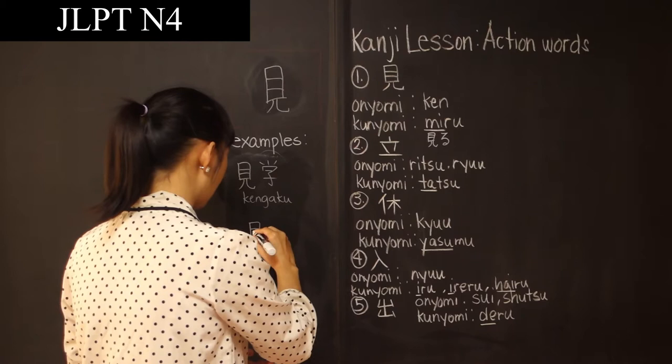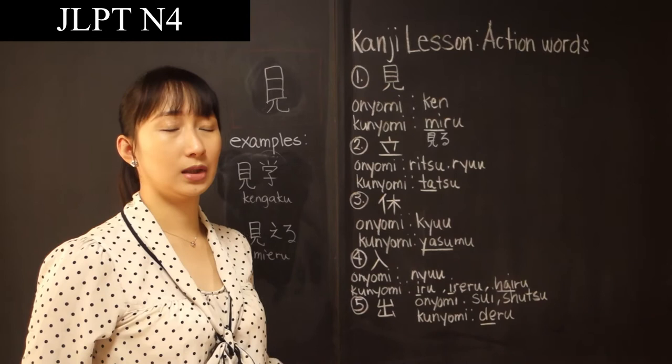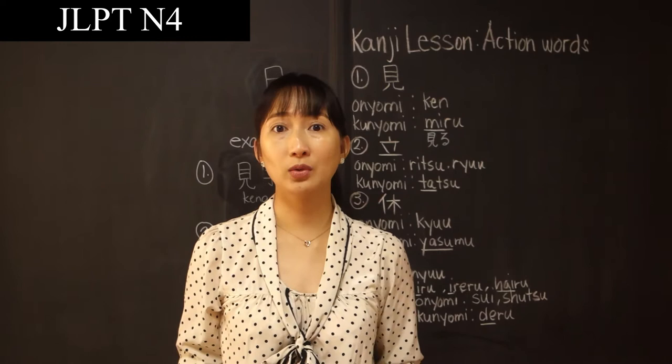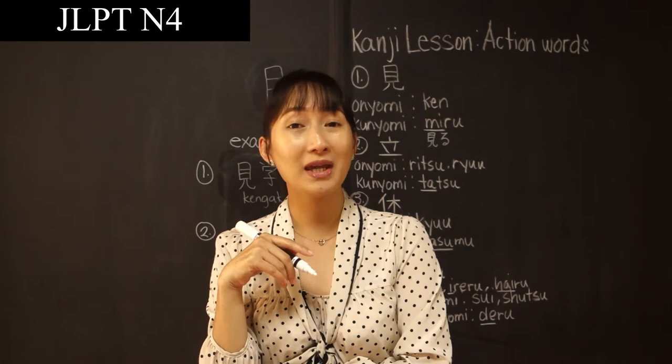Mieru means can see or can look. For example, I'm with my kids and we are waiting for my husband to come. Let's say we are at the airport and I want to say to my kid that I can see their dad's head: 'Daddy no Atama Mieru yo' — I can see your dad's head. That is how you use Mieru.